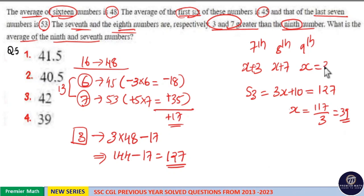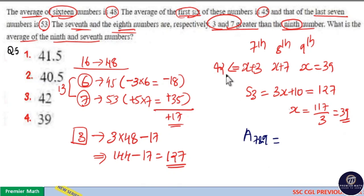If x is 39 then x plus 3 is 42. Which means average of 7th and 9th number is equal to 42 plus 39 which is equal to 81. 81 by 2 is equal to 40.5. So option 2 is your answer.